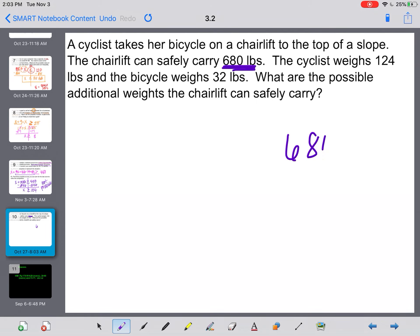Okay. Last but not least for today, a cyclist takes her bicycle on a chairlift to the top of a slope. The chairlift can safely carry 680 pounds. There's our total. Okay. The cyclist weighs 124 pounds. Okay. So there's already 124 pounds on this chairlift. And the bicycle weighs 32 pounds. What are the possible additional weights that the chairlift can safely carry?